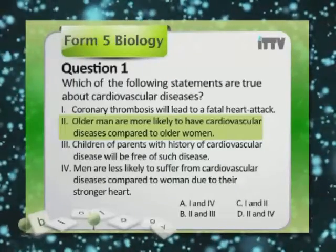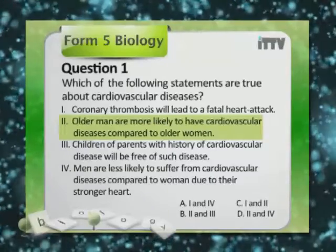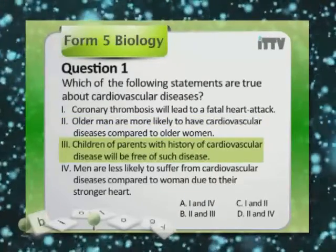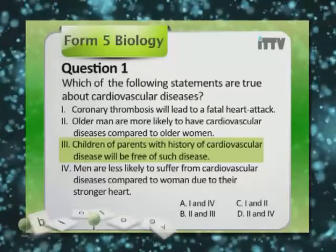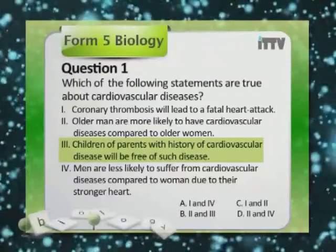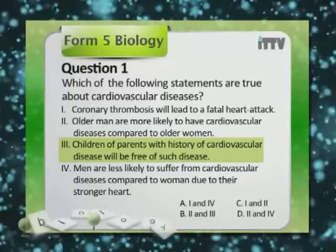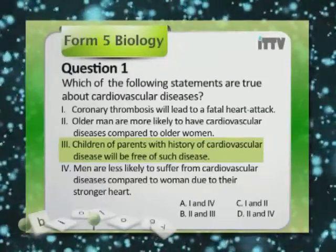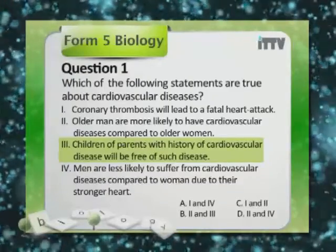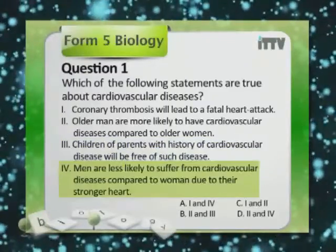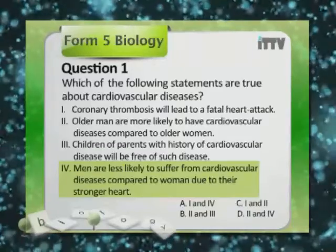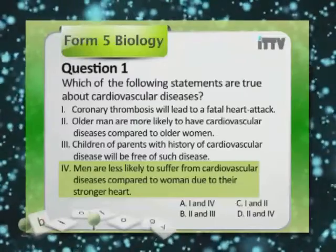Women have estrogen and progesterone that help combat cardiovascular disease, so older men are indeed more likely to be affected. Statement 3 is incorrect — heredity is an uncontrollable risk factor, meaning children of parents with cardiovascular disease have a higher risk of developing it. Statement 4 is the opposite of statement 2 and is therefore wrong. The correct answer is statements 1 and 2, which is option C.